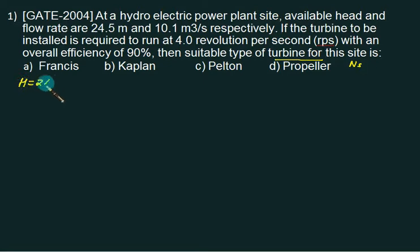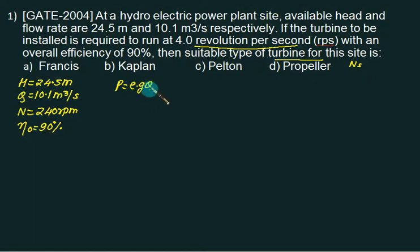So we have head equal to 24.5, discharge is 10.1, your speed should be in rpm, we are given rps. So we have to multiply by 60, that is 240 rpm. Overall efficiency is given as 90 percent. So first of all we will calculate power developed. Power developed is ρ G Q H times overall efficiency. 9810, Q is 10.1, H is 24.5, overall efficiency is 0.9. So we can get the value of power equals 2184 kilowatts.